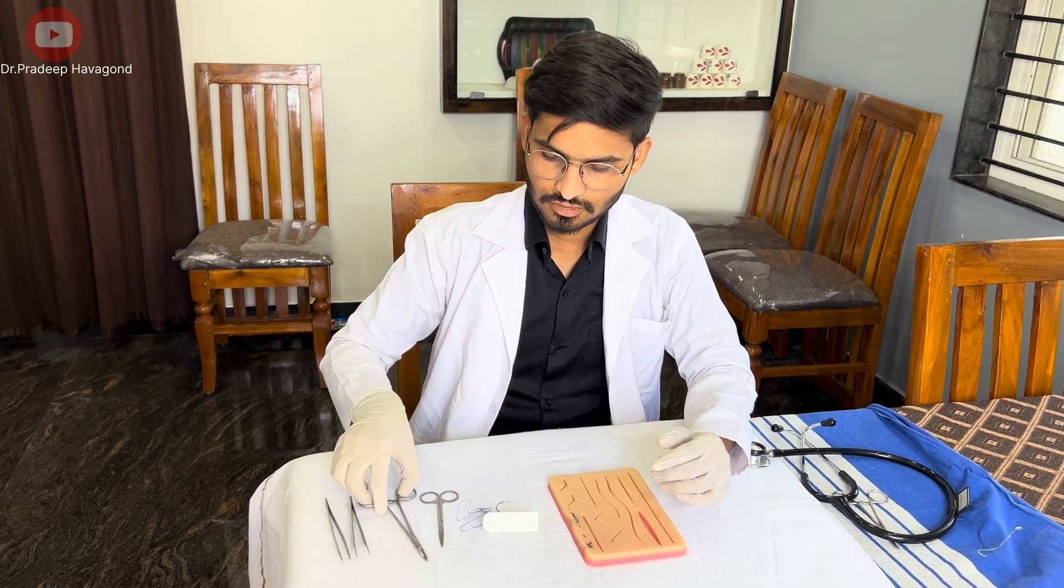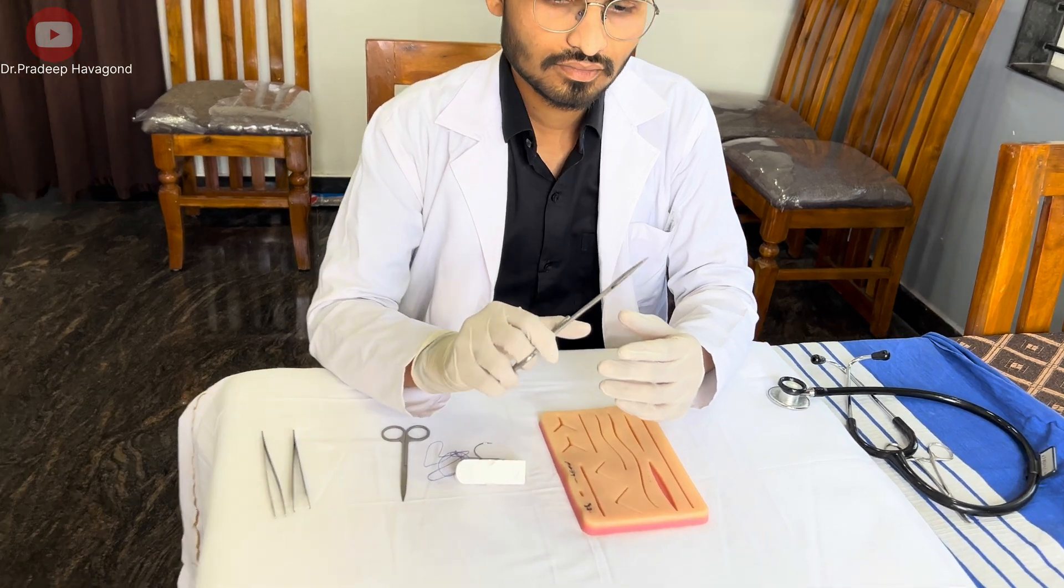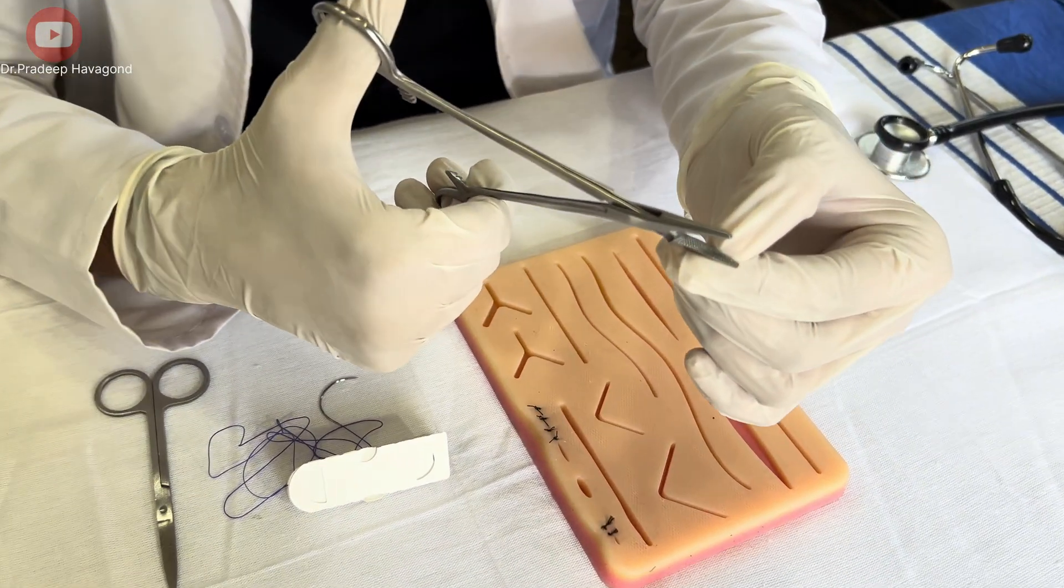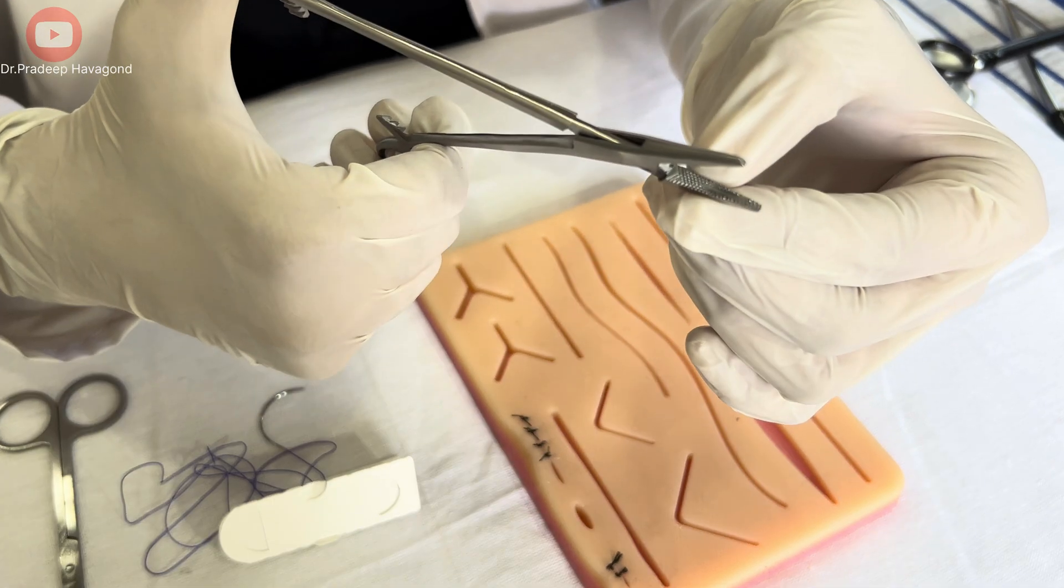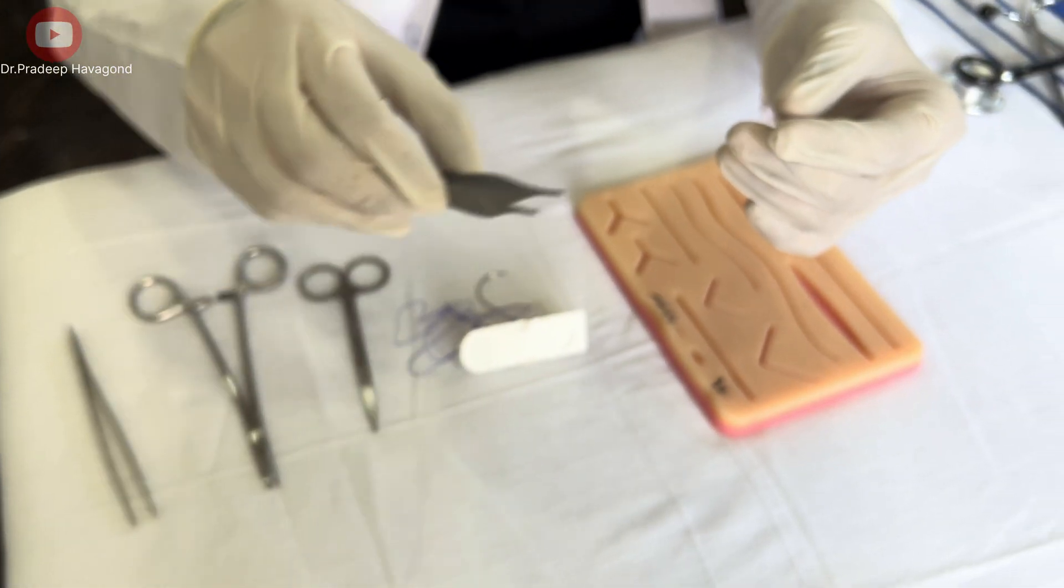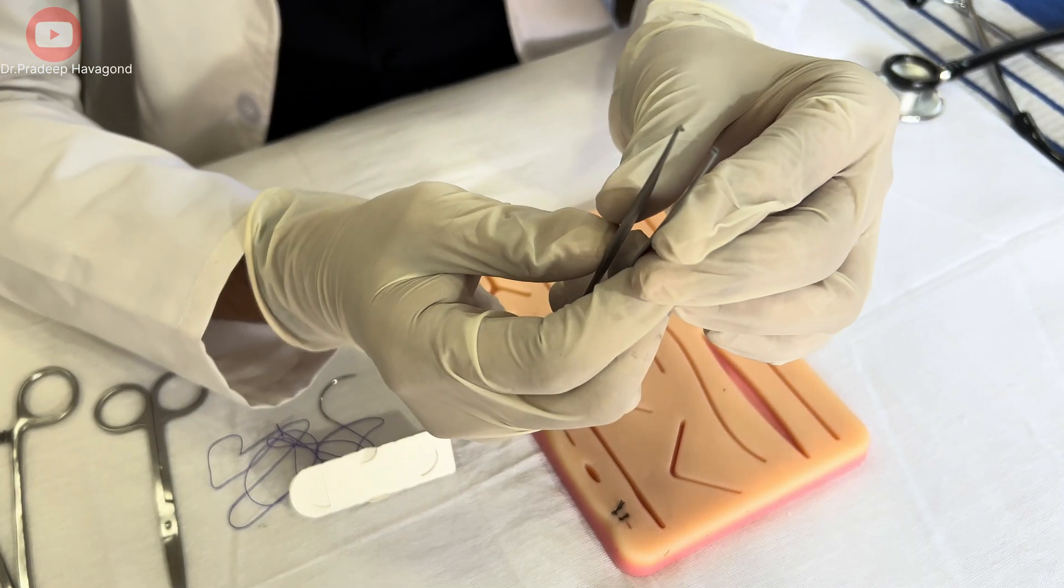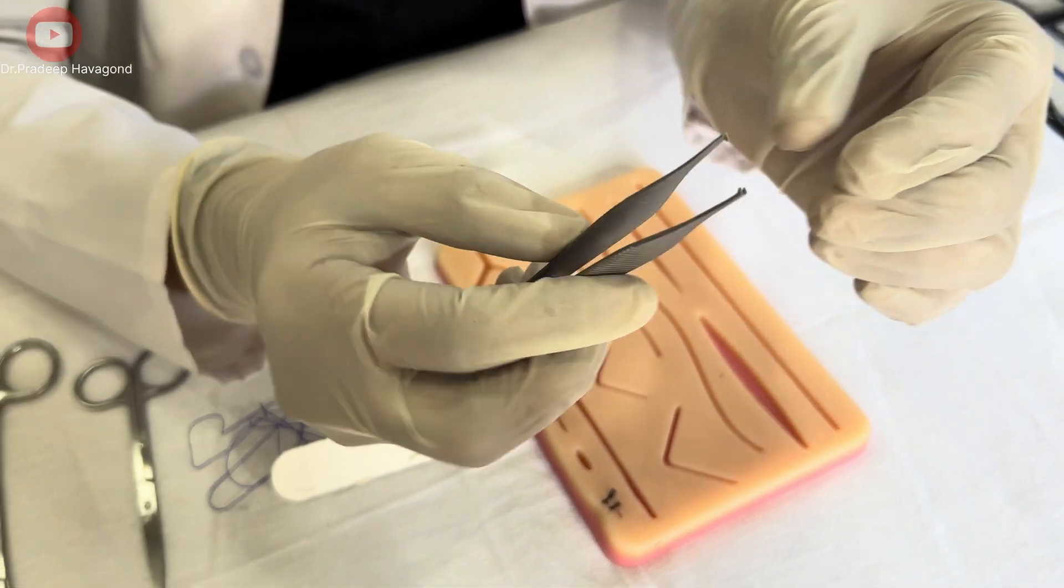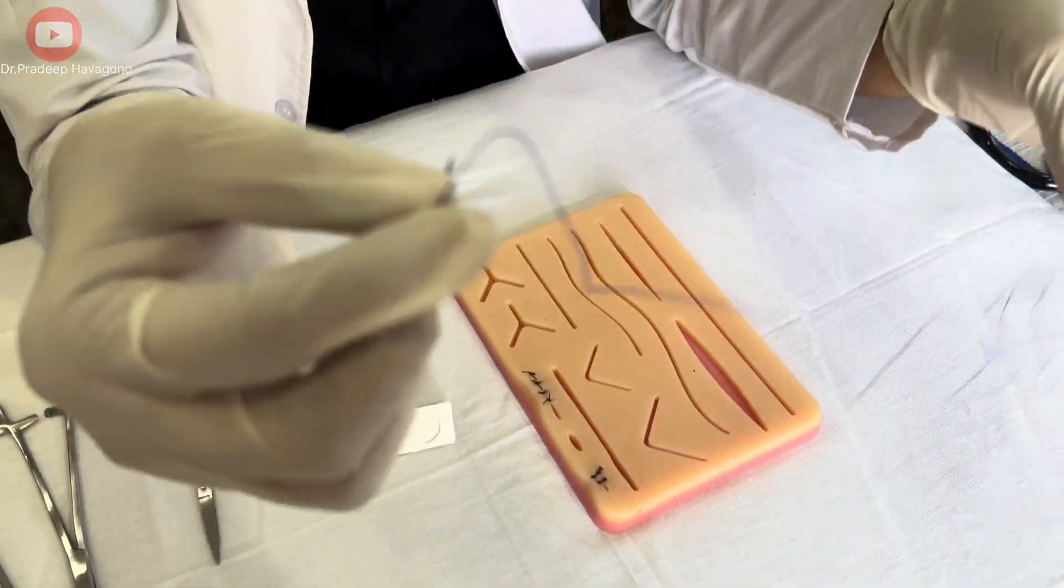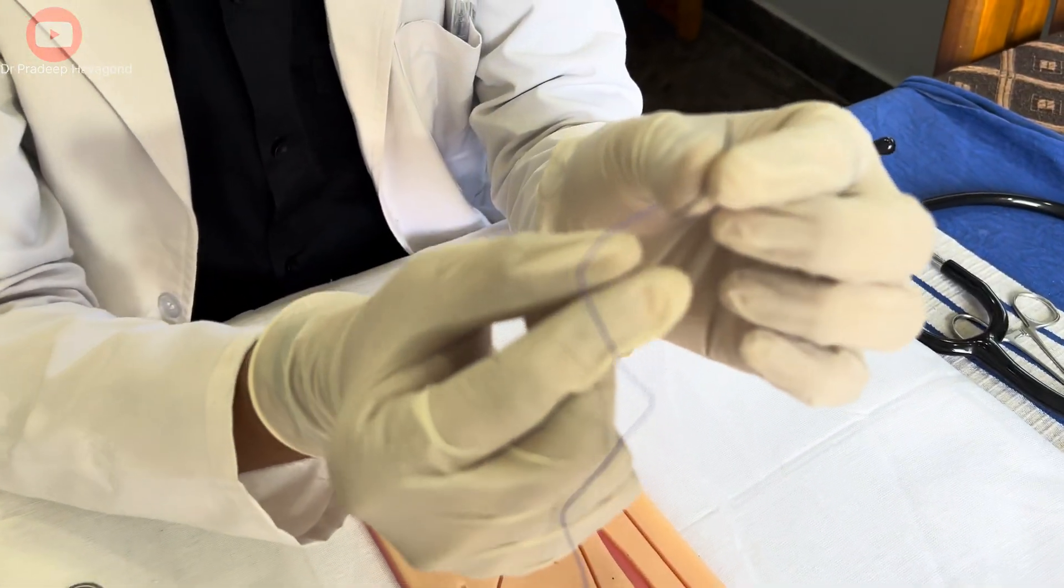Before we dive into the technique, let's quickly go over what you'll need: a suture kit with appropriate needle holder, toothed forcep, curved needle with suture thread, and plain scissors.